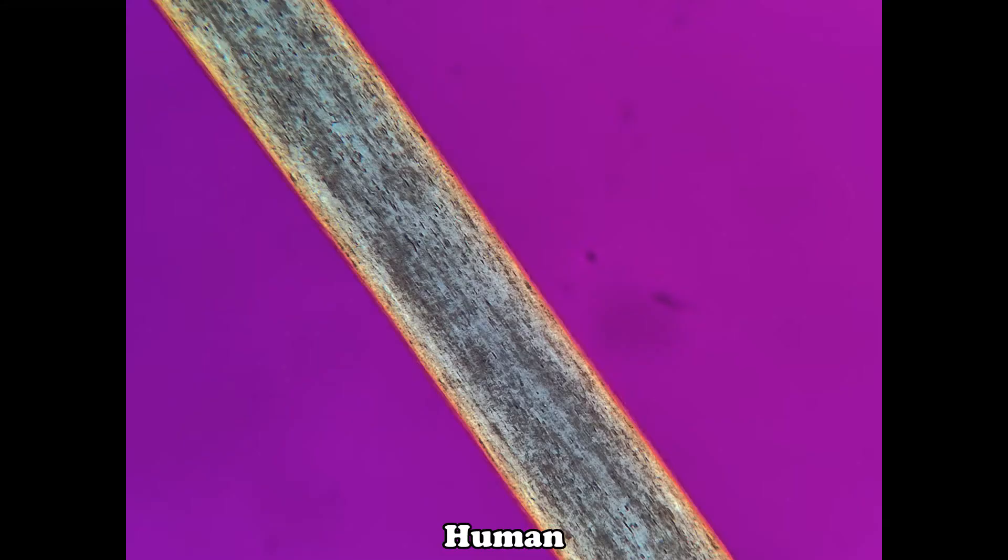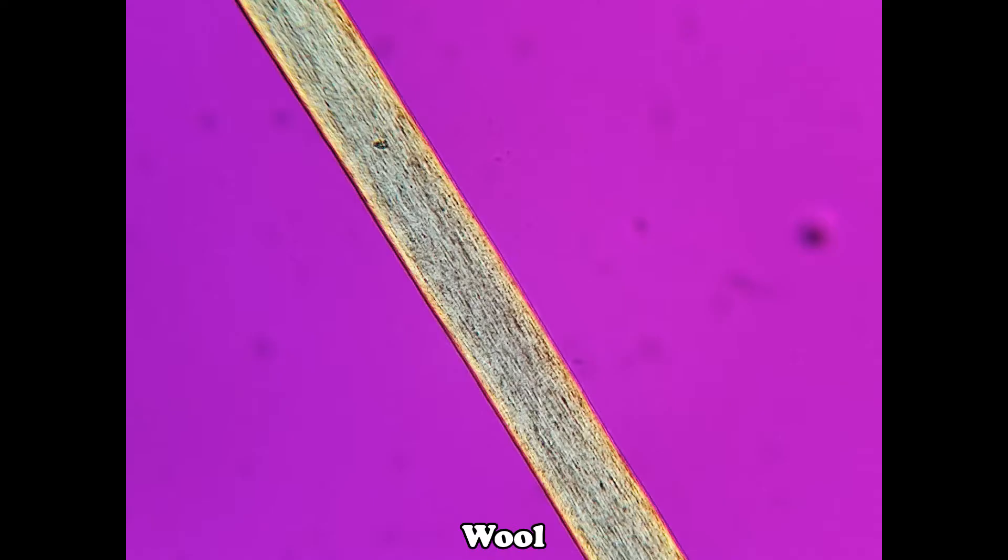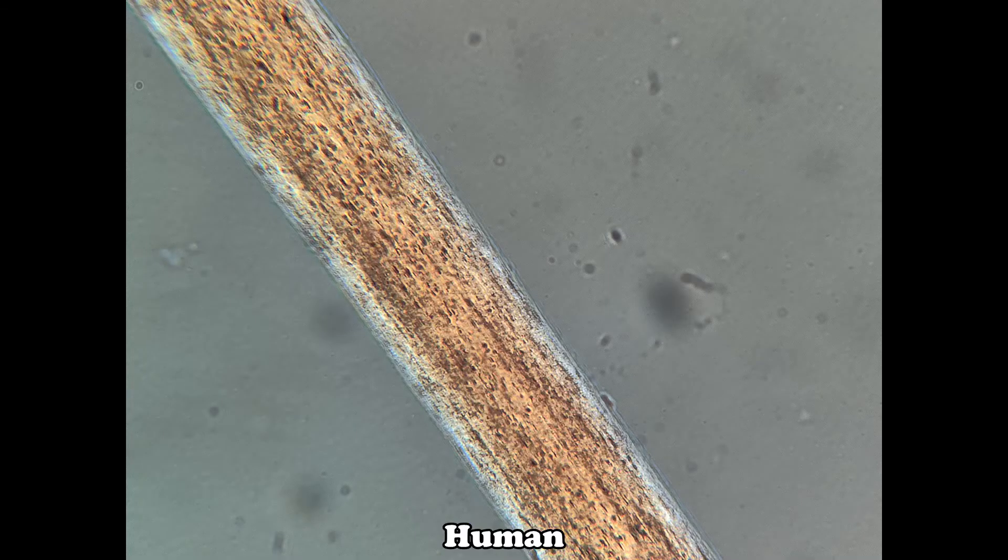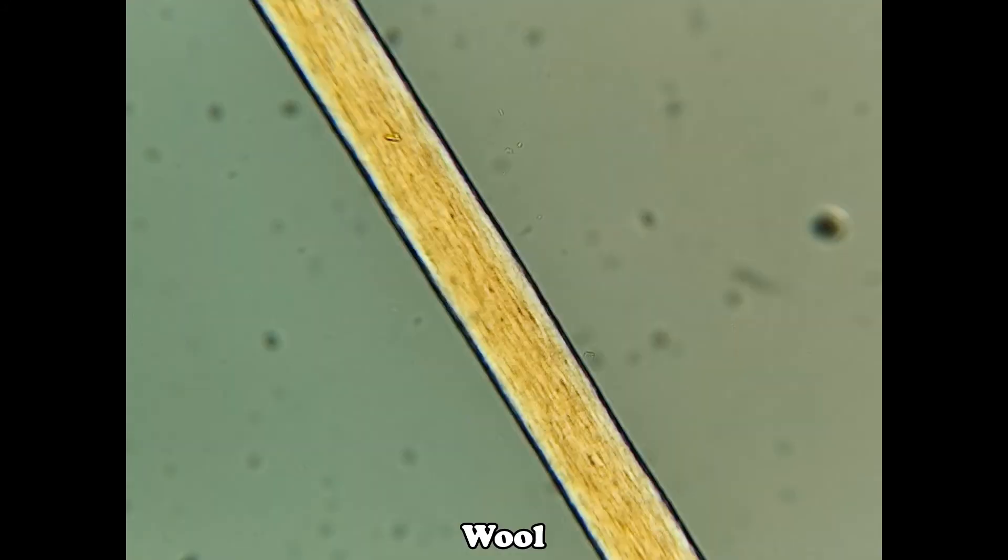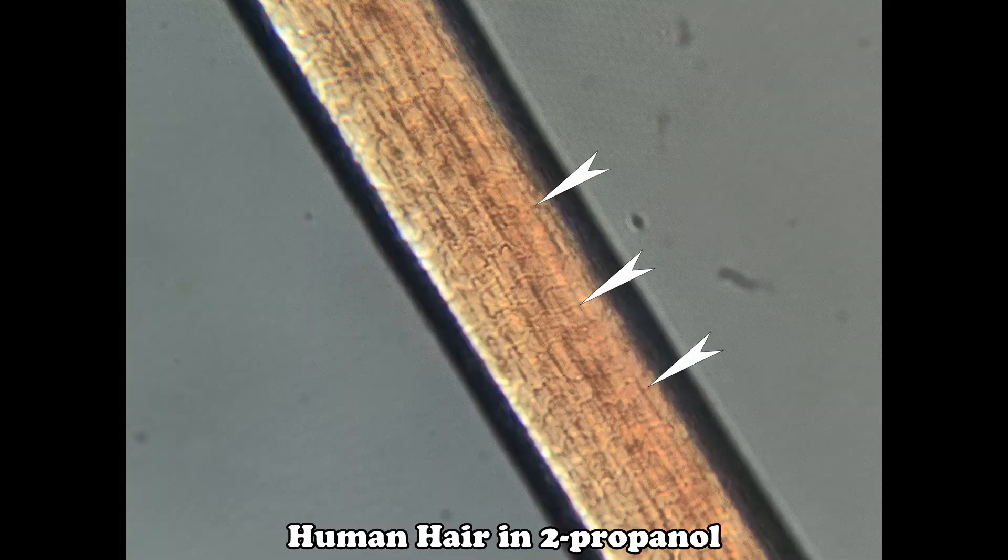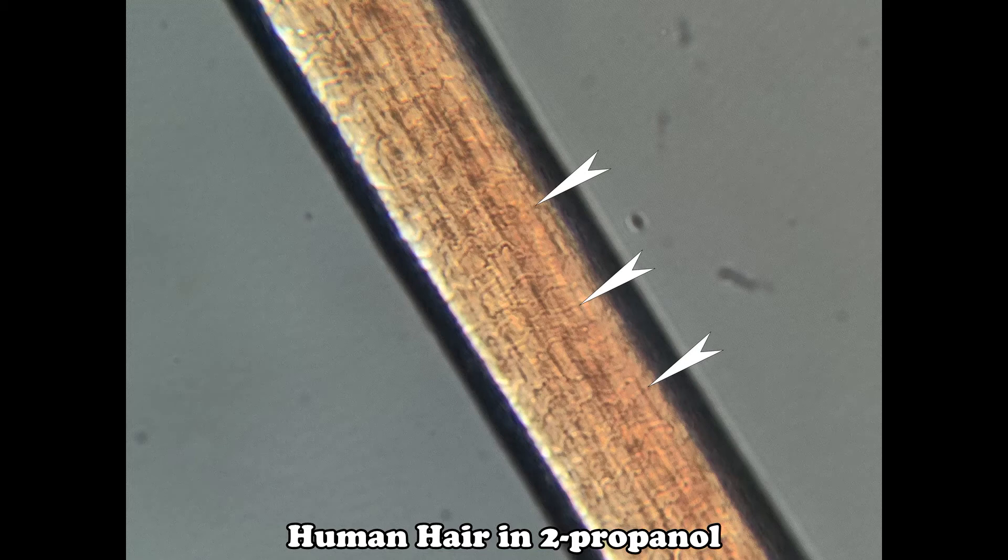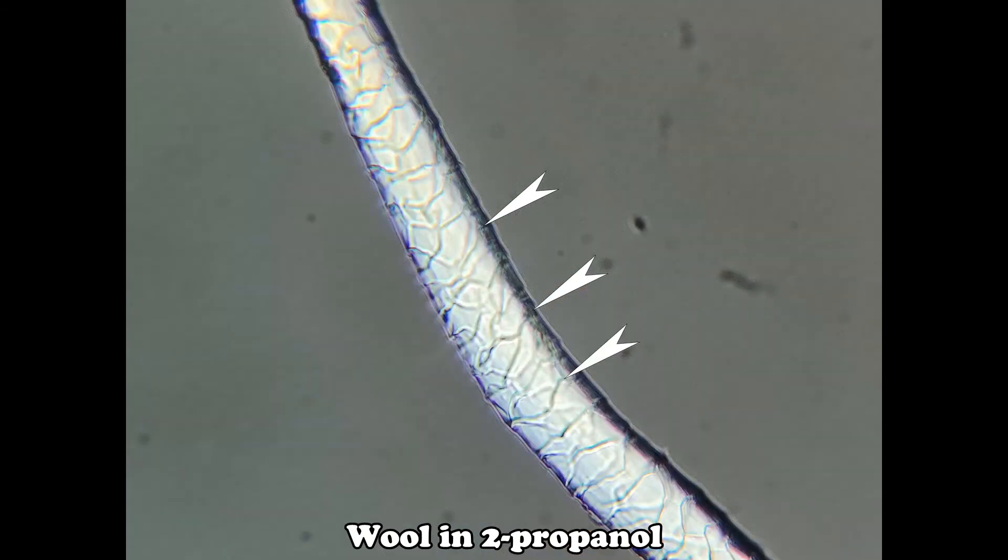Here's where your refractive index medium really makes a difference. When you're prepping something that has the same refractive index as your liquid, in this case, 1-5-5 liquid and hair, which is roughly the same refractive index, you lose relief. When you're looking for hair scale patterns, which is what you're going to need to differentiate human hair from wool, get rid of the refractive index oils altogether. Use propanol or water.